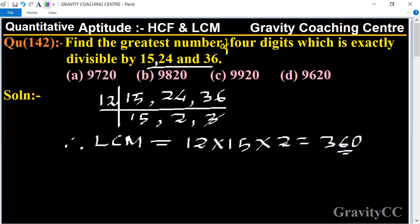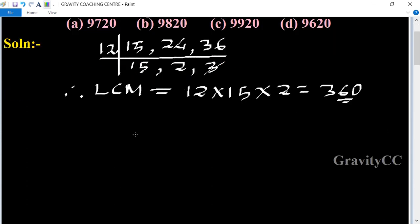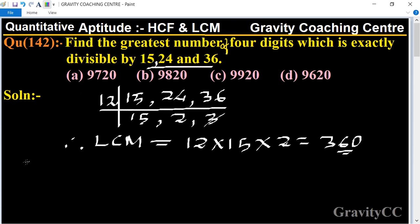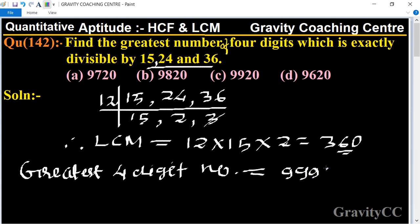So find the greatest number of four digits. We know that the greatest four digit number is 9999. Now we divide this number by 360.